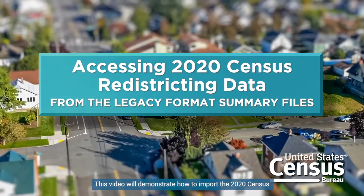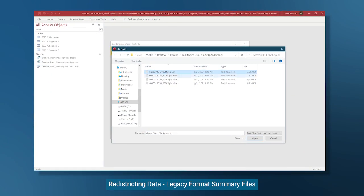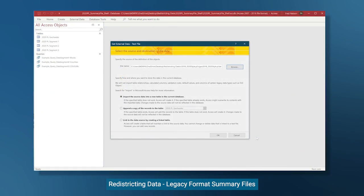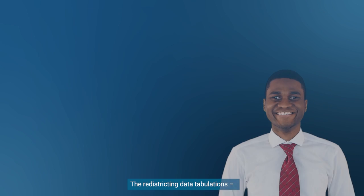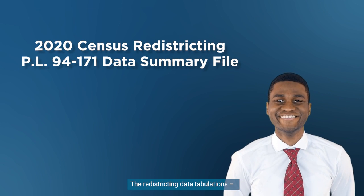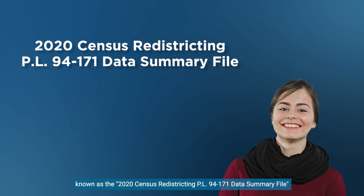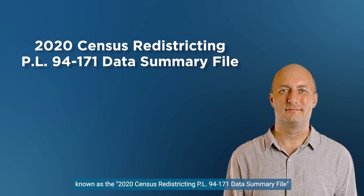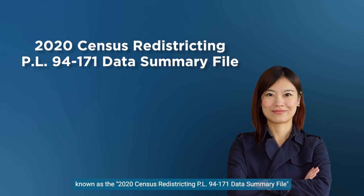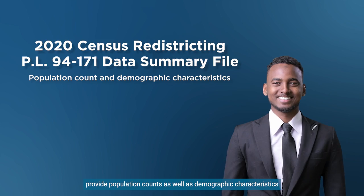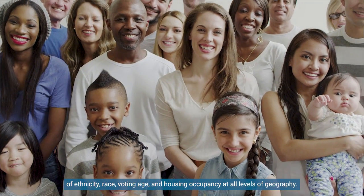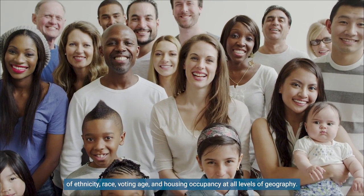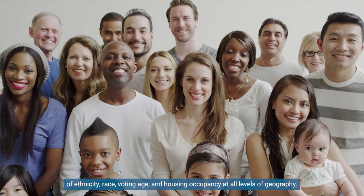This video will demonstrate how to import the 2020 Census Redistricting Data Legacy Format Summary Files and then extract familiar tables for specific data and geography. The Redistricting Data Tabulations, known as the 2020 Census Redistricting PL94-171 Data Summary File, provide population counts as well as demographic characteristics of ethnicity, race, voting age, and housing occupancy at all levels of geography.